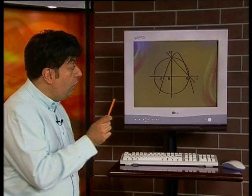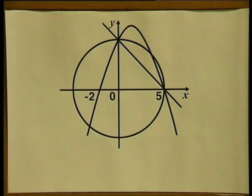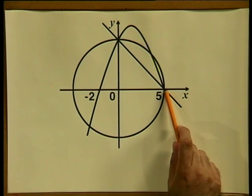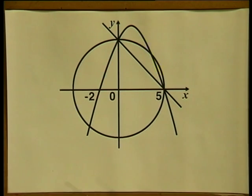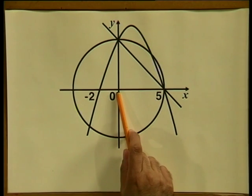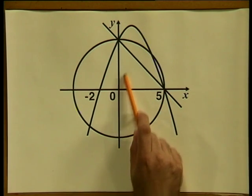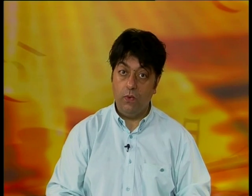Do you think that the y-intercept of the parabola will also be 5 because of the circle? Why would this be? Let's check. The circle is the same distance from the center everywhere — that's how a circle works, its radius is constant. So if the center is here and this distance is 5, then the distance from the center to the circle there is also 5.